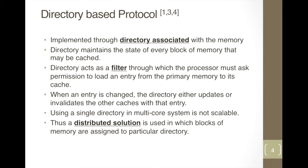Let's dive into directory-based protocol. The implementation consists of a directory associated with memory. The directory maintains the state of every block of memory that may be cached. Consider the directory as a filter which the processor must pass through to load from primary memory to its cache. Every time an entry is changed, the directory updates or invalidates the cache with that entry.